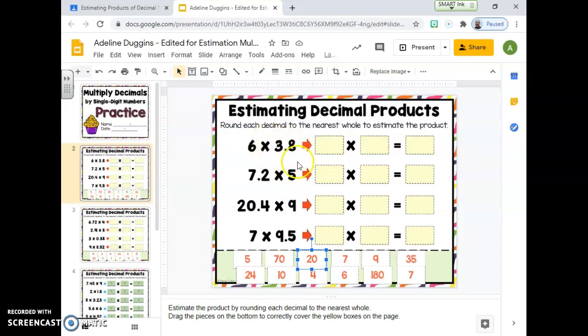I want to think about this decimal number as a dollar amount, so six times three dollars and eighty cents. Well, three dollars and eighty cents, that's closer to four dollars than it is to three, so this is going to be six times four. Here's seven dollars and twenty cents, twenty dollars and forty cents, and nine dollars and fifty cents. This is the only one, you know, when you get to half of something, five or more raise the score, so nine dollars and fifty cents that's actually going to round up to ten.